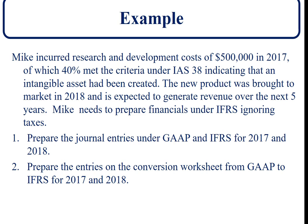What we're going to do is first look at the journal entries under GAAP and the International Standard for 2017 and 2018, and then what are the entries for the conversion worksheet when you go from GAAP to the International Standard for those years.